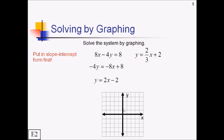Graphing these now. Y-intercept of negative 2. Slope of up 2, right 1. Draw the line.